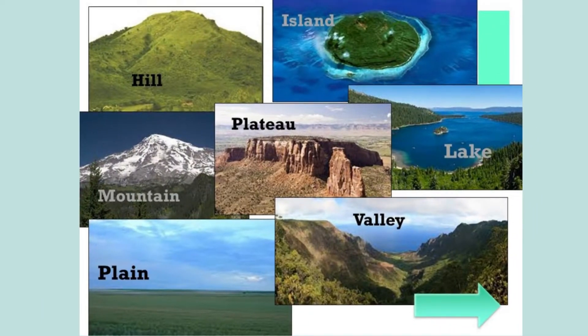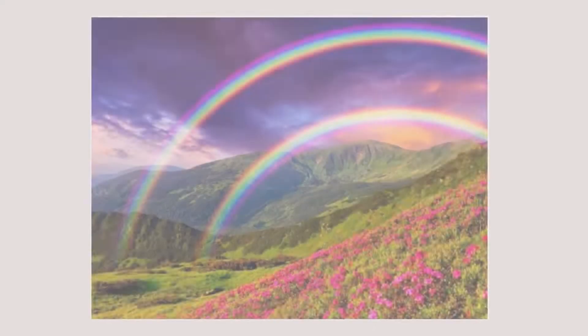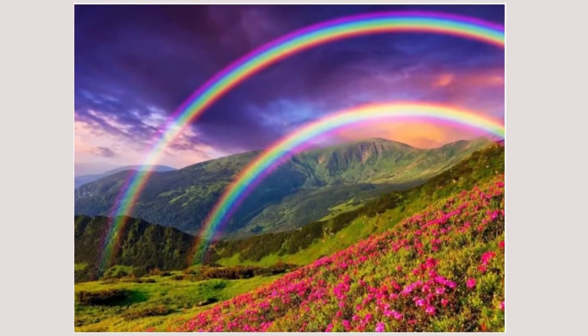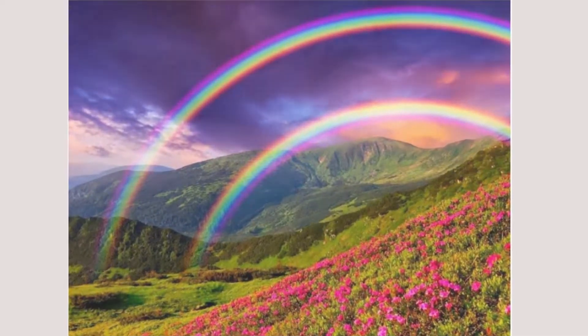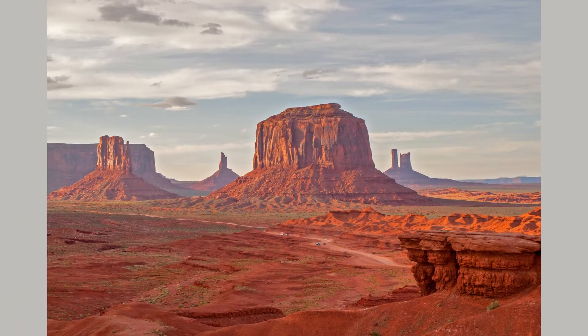are the four major types of landforms. Minor landforms include buttes, canyons, valleys, and basins.